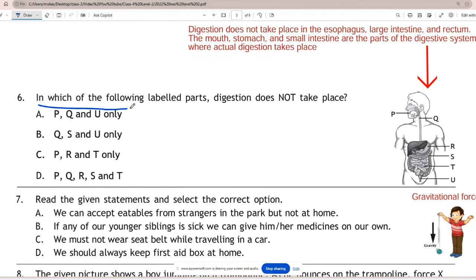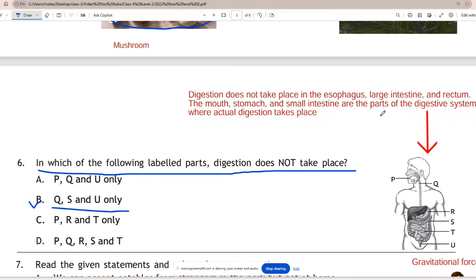Question 6: In which of the following labeled parts does digestion not take place? Correct answer is B. Digestion does not take place in the esophagus, large intestine, and rectum. The mouth, stomach, and small intestine are the parts of the digestive system where actual digestion takes place.